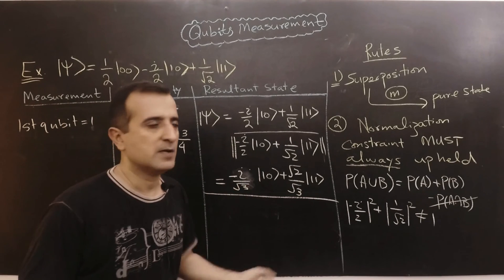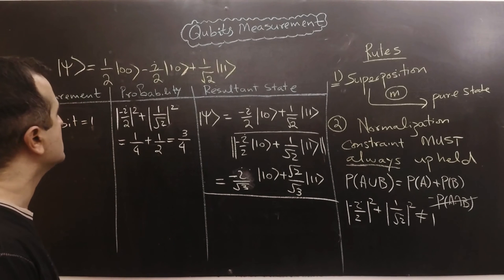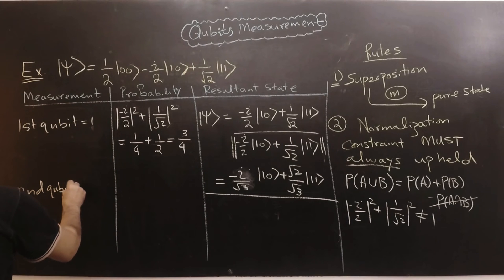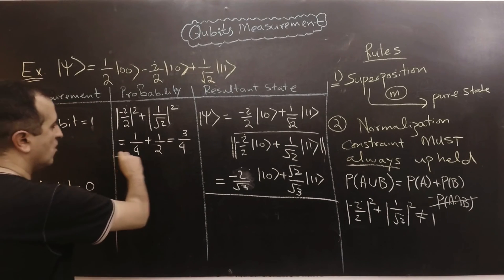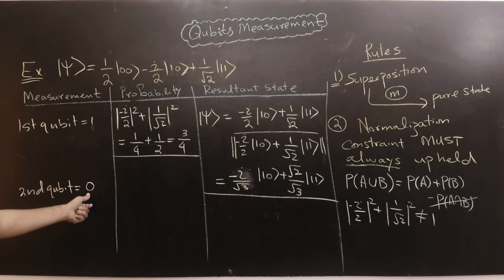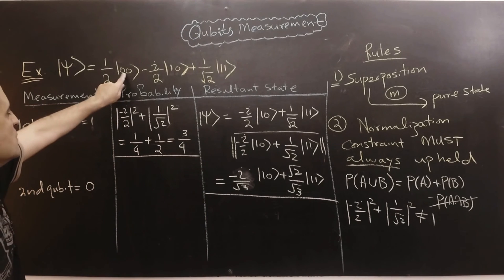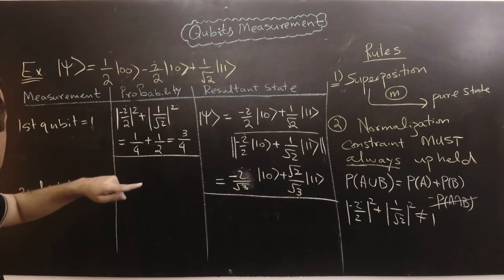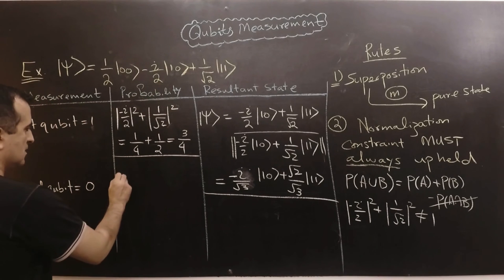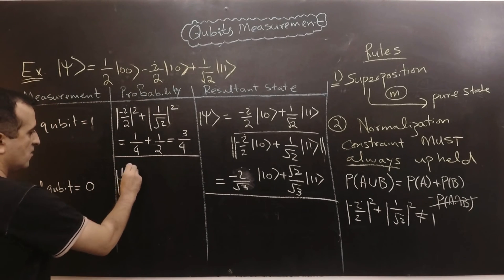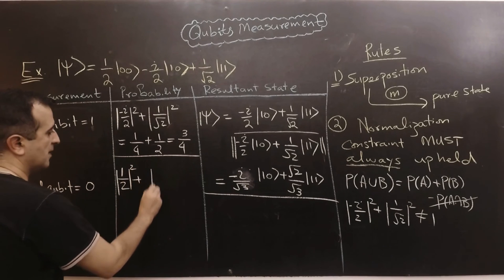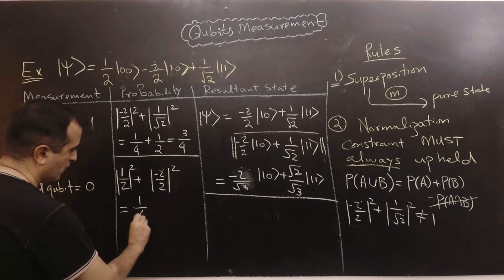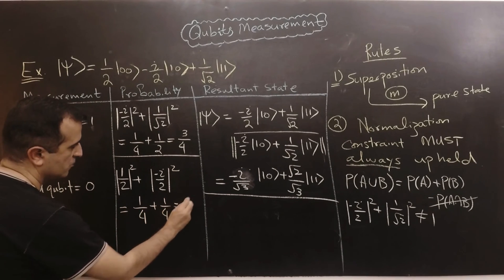Similarly, we can measure the second qubit. Assume the result of measurement is zero. The probability of the second qubit being zero is the sum of probabilities that the register is in state zero-zero and in state one-zero. The answer is |1/2|² + |−iota/2|² = 1/4 + 1/4 = 1/2.